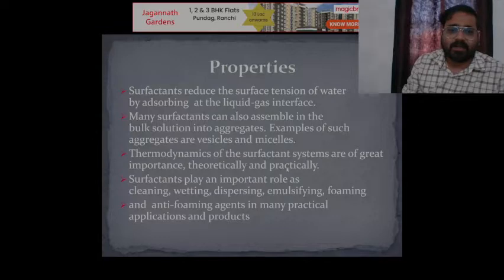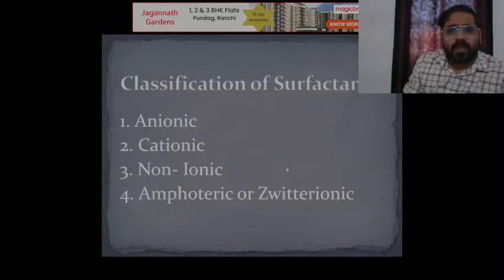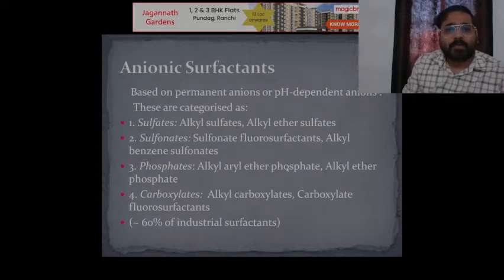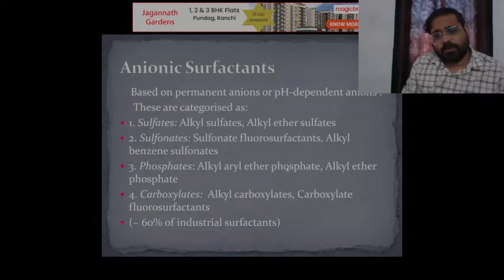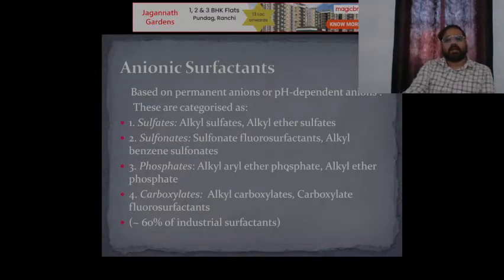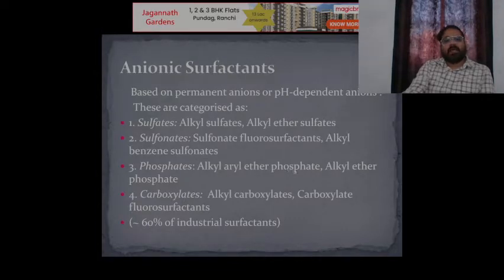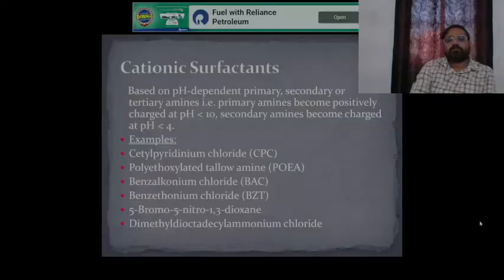There are different types of surfactants: anionic, cationic, non-ionic, and zwitterionic. Anionic surfactants are based on negatively charged ions. Examples include sulfates (alkyl sulfate), sulfonates, phosphates (alkyl aryl ether phosphate, alkyl ether), and carboxylates (alkyl carboxylate). These are anionic in nature.